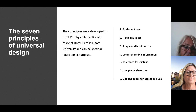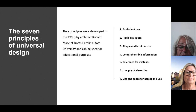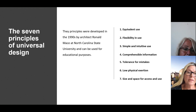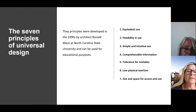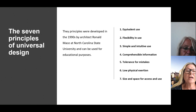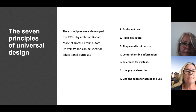The third principle is simple and intuitive use, which means the use must be easy to understand regardless of the user's experience, knowledge, language skills or current level of concentration. The fourth principle is comprehensible information, which means that the design communicates the necessary information to the user in an effective way, regardless of the surrounding conditions or the user's sensory abilities. Number five is about tolerance for mistakes: the design minimizes risks and serious consequences of mistakes or inadvertent actions.